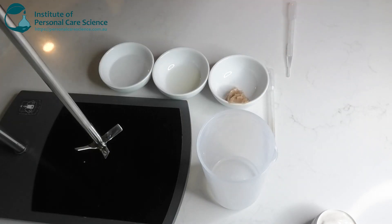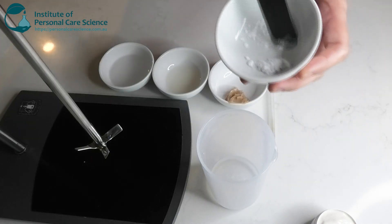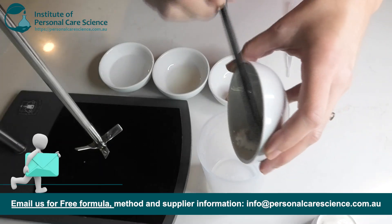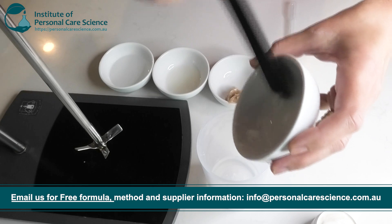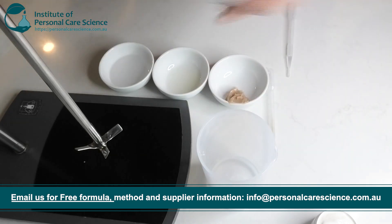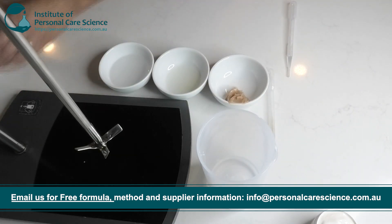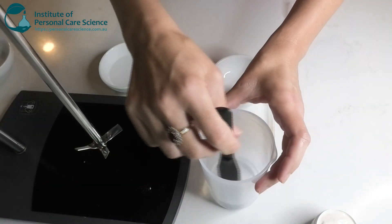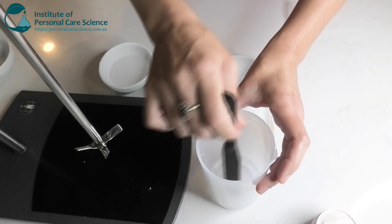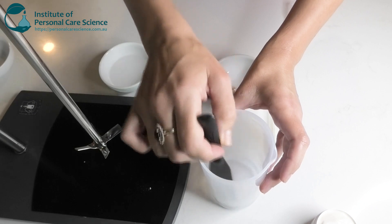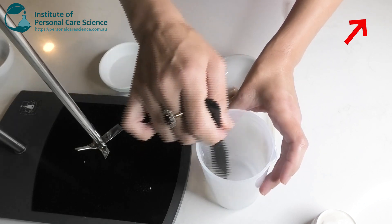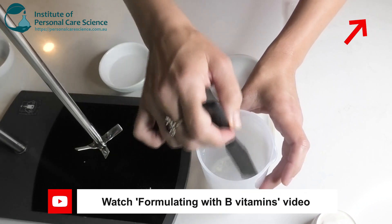I'm also going to add in another active. This one's niacinamide or vitamin B3. It's more commonly known. This is fully water soluble so you won't have any issues. This one going into the water phase. Let's give that a little stir. Niacinamide is known to help with the cell metabolism, evening out the skin tone. It's great for anti-aging. It also helps to reduce inflammation.